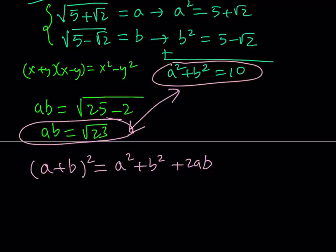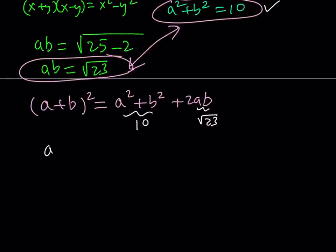Now, a squared plus b squared is 10 from this equation. So, this is equal to 10. And, ab is equal to square root of 23. Therefore, we get the following. a plus b quantity squared equals 10 plus 2 root 23.